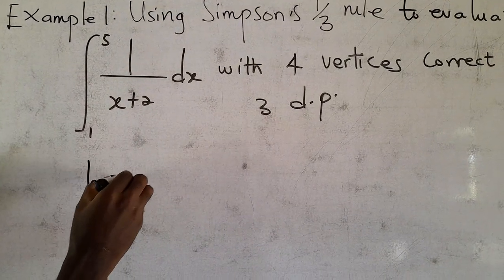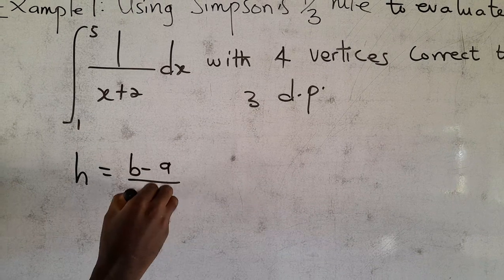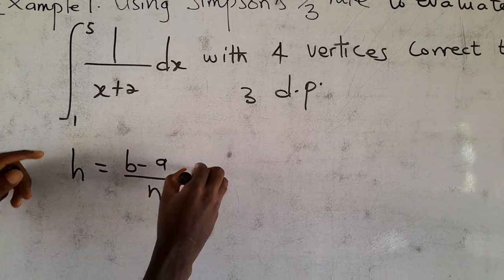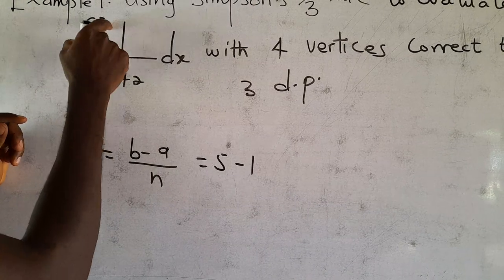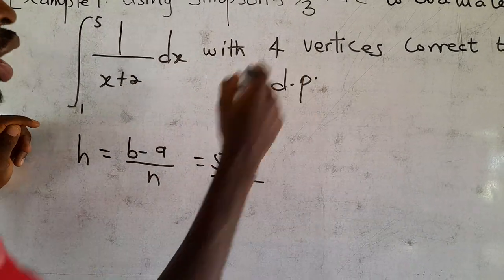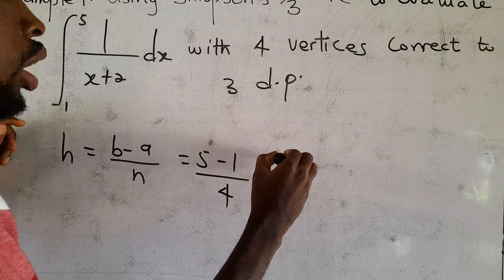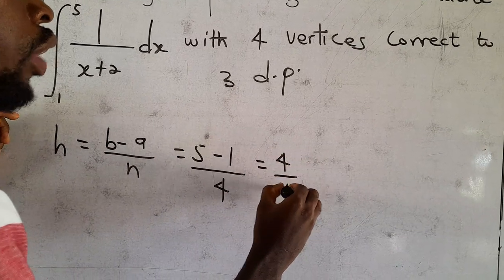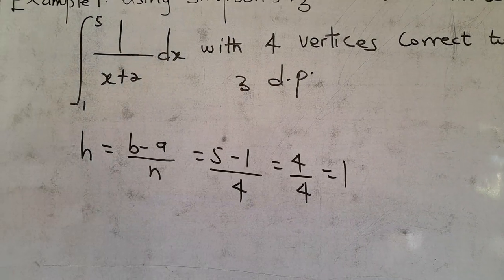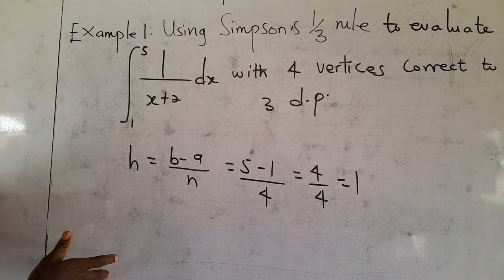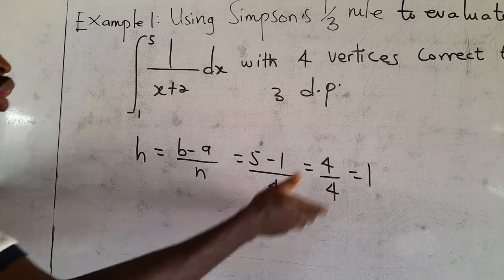So we find our h. Our h is (B − A) / N. Where B is 5, A is 1, and N is the number of subintervals which is 4. So 5 minus 1 is 4 over 4, and 4 divided by 4 is 1. That means the interval difference is 1, so the values of x are 1, 2, 3, 4, up to 5.